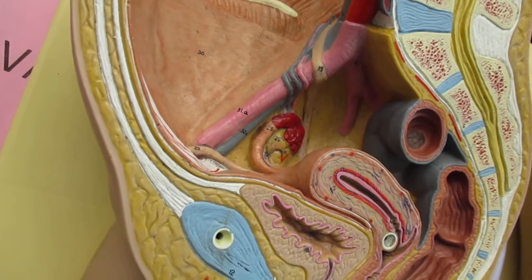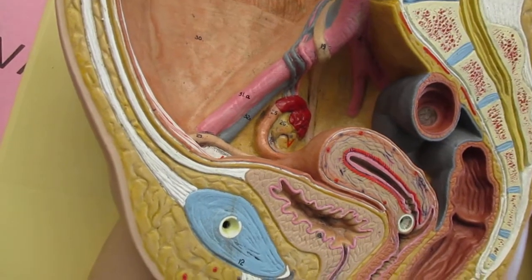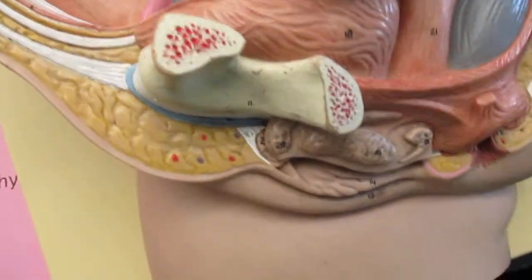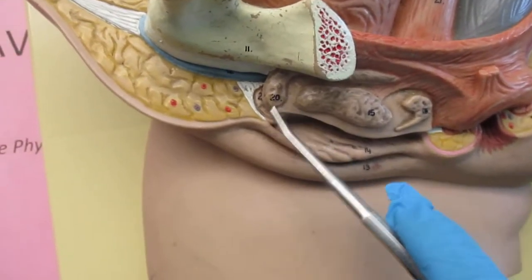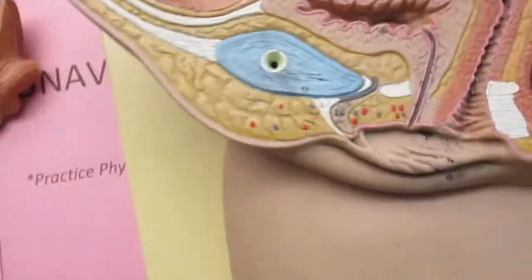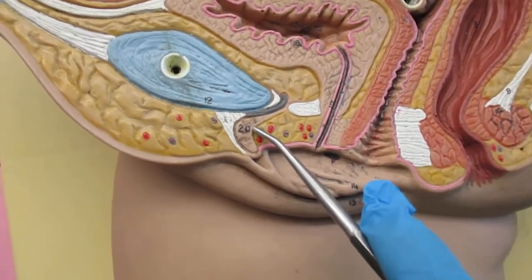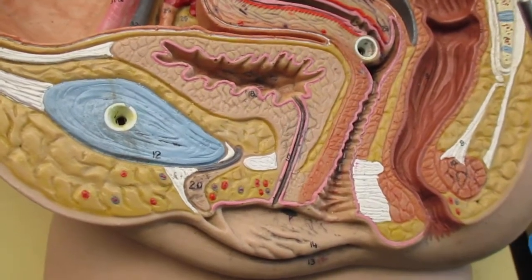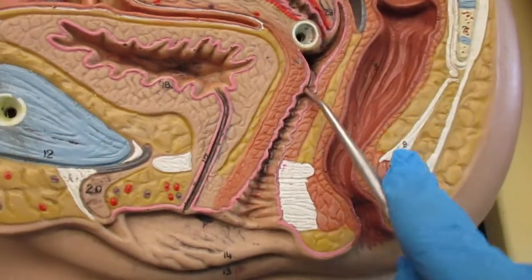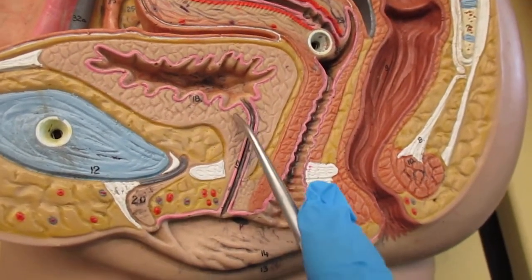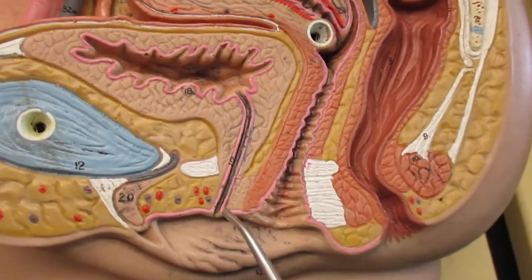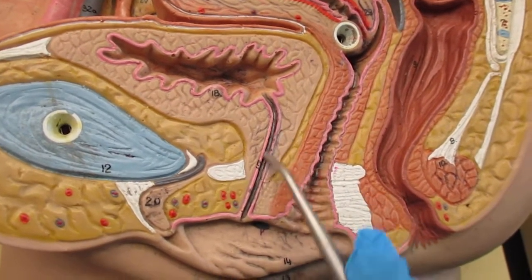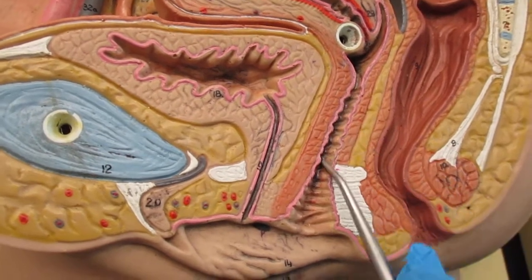We have the clitoris for the female. Here is the clitoris right here — if you take this off you can see the clitoris clearly. Here's the pubic symphysis. We have the vagina here, and the vagina is more posterior to the urethra.